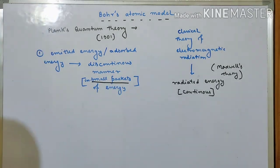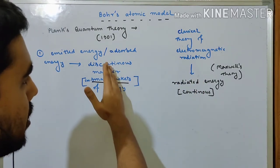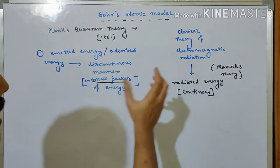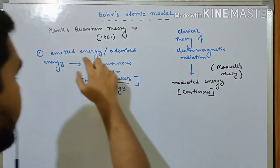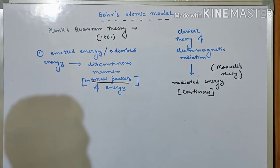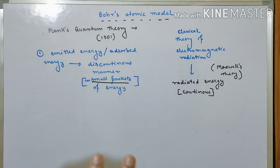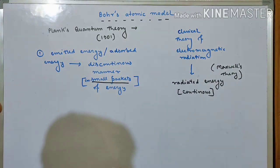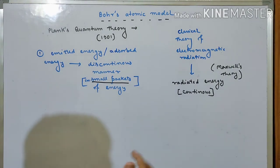This is a completely opposite concept, as you can see. Here Maxwell suggests energy is emitted in a continuous manner, but according to Planck's quantum theory, radiant energy, whether it is absorbed or emitted, must happen in a discontinuous manner. That means suppose energy is coming in, then stopped, then again coming in — like that.